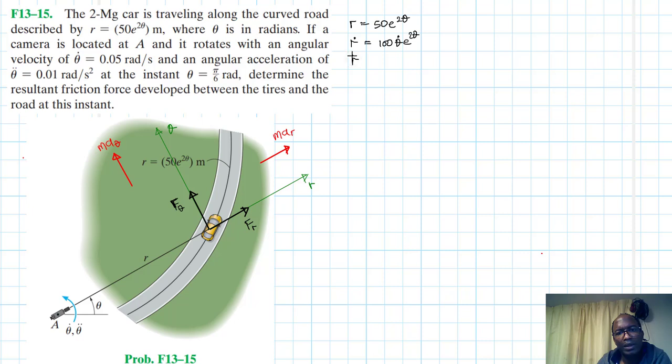And then R double dot, we are going to use the product rule. I'll factor out 100. So I have two functions here: theta dot and E to the power 2 theta. So for product rule, I work out the derivative with respect to time of one while maintaining the other one constant. Then I move on to the second where I work out the derivative of the other while making the other one constant. So this just becomes 2 theta dot squared E to the power 2 theta.